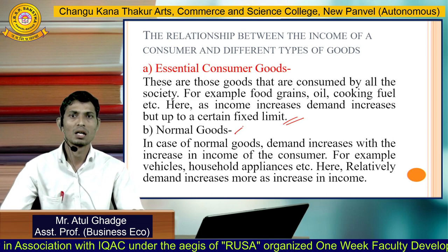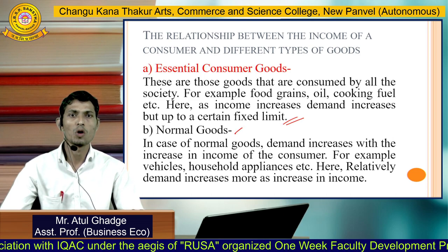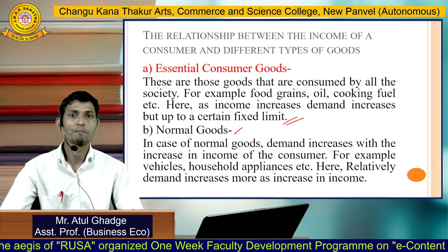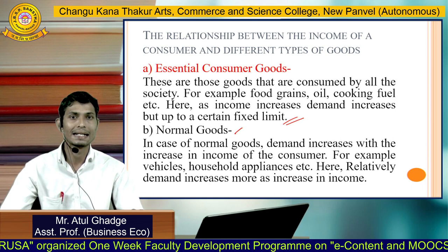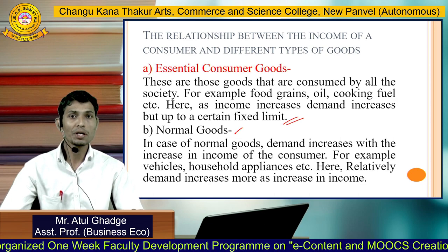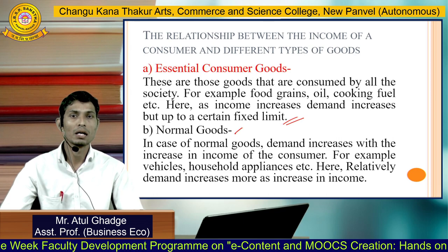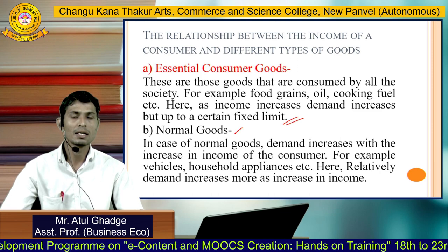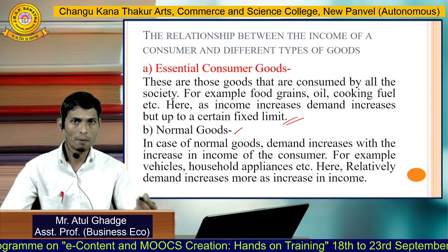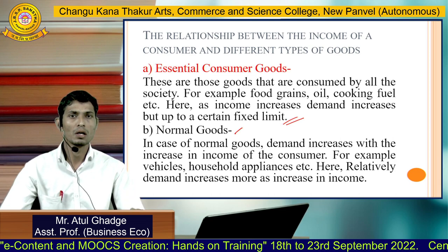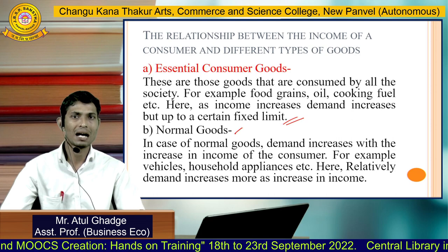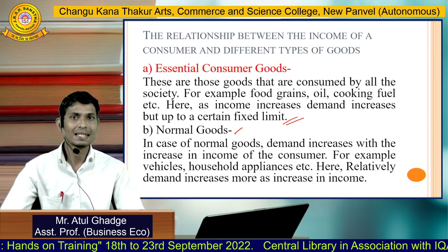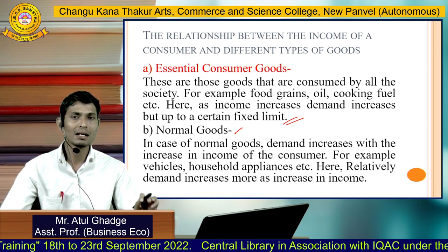Second is normal goods. In the case of normal goods, demand increases with increase in the income of the consumer — for example vehicles, household appliances, etc. Demand increases relatively more with increase in income compared to essential consumer goods. Normal goods have more impact than essential consumer goods when income is considered. When income increases, demand for normal goods increases more than for essential consumer goods, because essential goods are consumed only up to a certain limit.